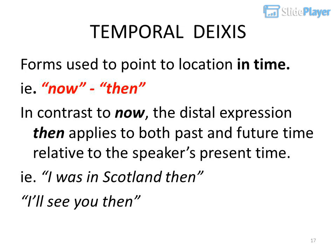Temporal deixis: forms used to point to location in time, such as 'now' and 'then.' In contrast to 'now,' the distal expression 'then' applies to both past and future time relative to the speaker's present time — for example: 'I was in Scotland then' and 'I'll see you then.'